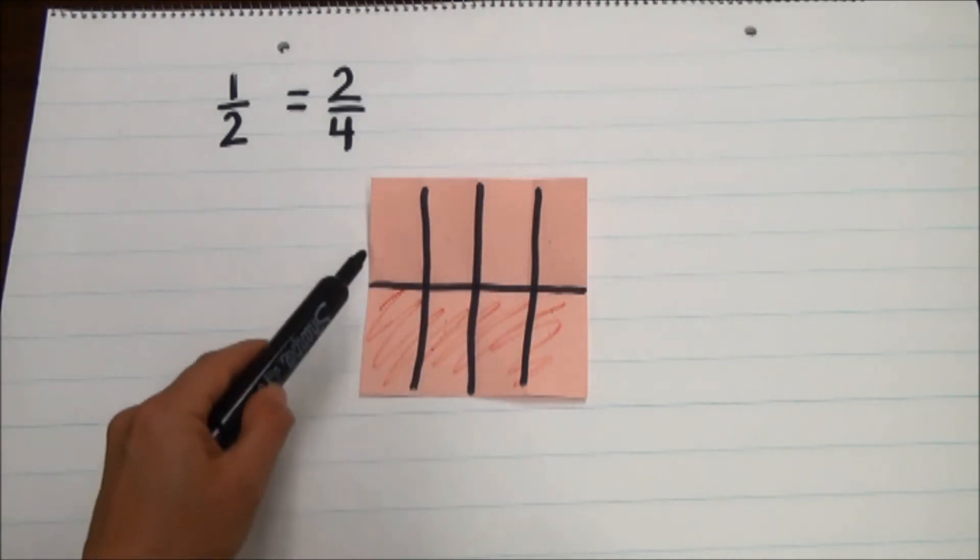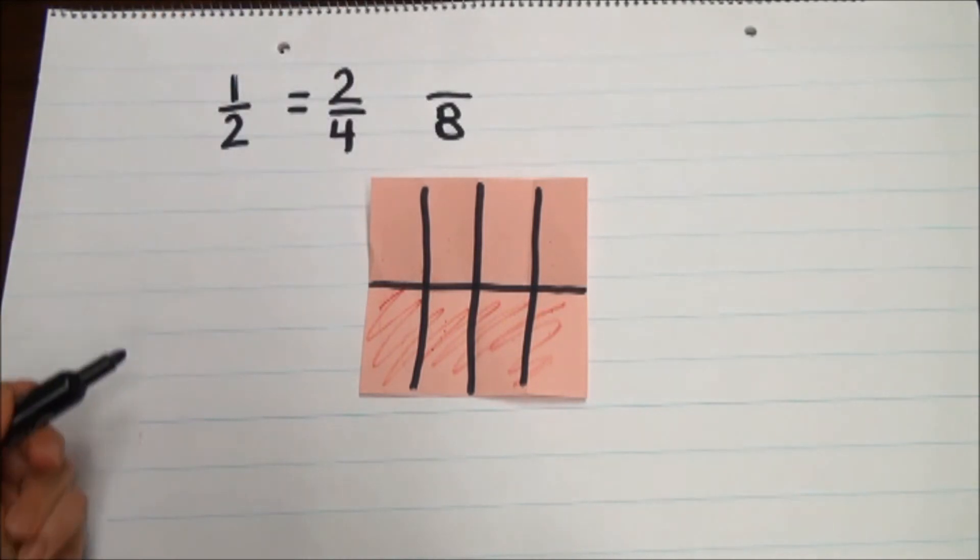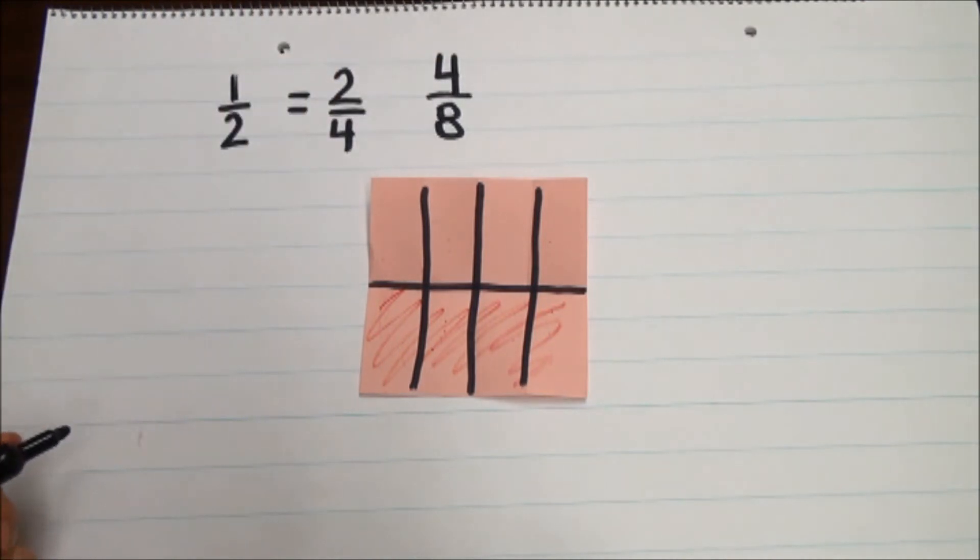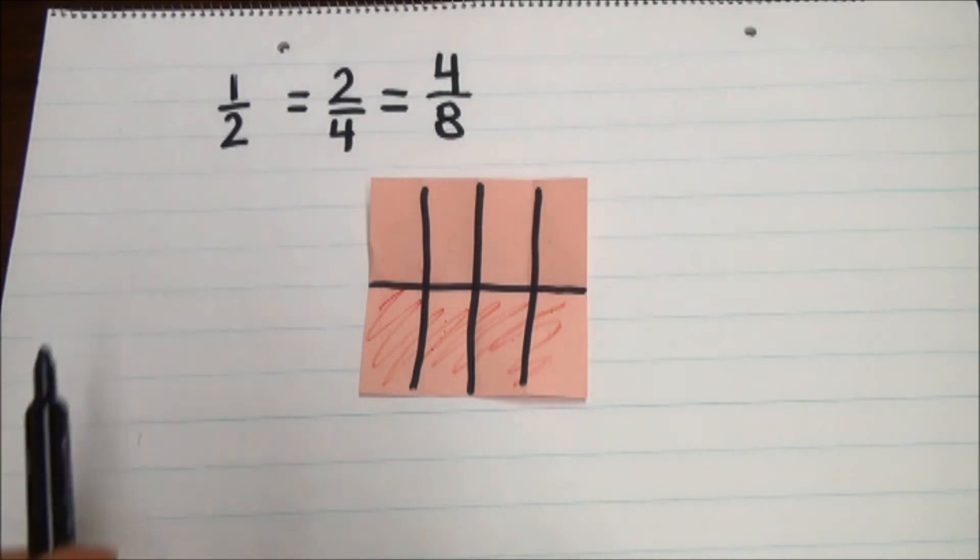So we ended up, again, doubling the number of total parts. So we doubled the number of parts. Now we have eight parts. And when we doubled those parts, we also ended up doubling the part that was shaded. So since we didn't actually change anything, we could say that four-eighths is really equal to two-fourths and it's really equal to one-half.